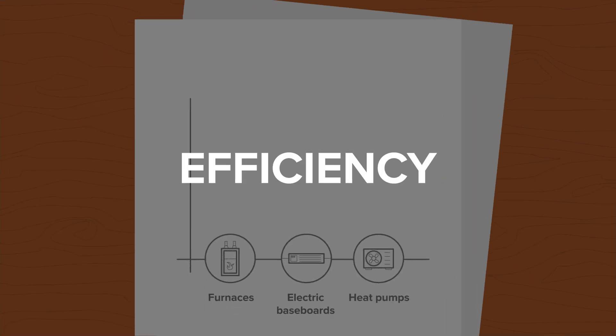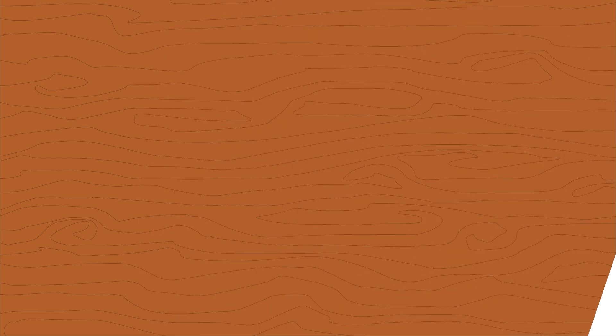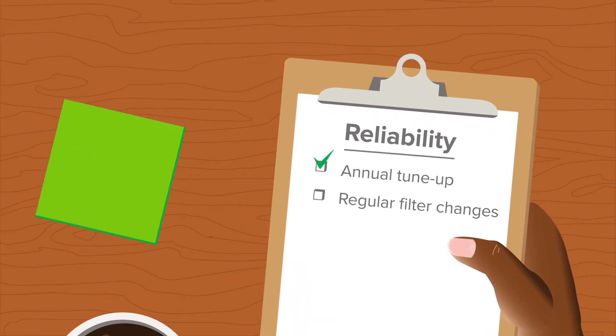It also means energy savings. Heat pumps can heat your home two to three times more efficiently than other systems, which, depending on your current heating fuel, can have a significant impact on your energy costs. As a reliable, time-tested technology, heat pumps require no more maintenance than a standard furnace and air conditioner.